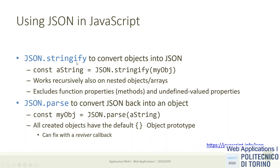JSON.stringify is a method that can be applied to any type of object and converts it into a string containing the JSON representation of that object. This function is recursive — if the object contains nested arrays or nested objects, those are stringified too. JSON.stringify stops when it finds primitive values like numbers or strings, or when it finds something it cannot serialize, like functions, which are not a valid type in JSON and will be skipped.